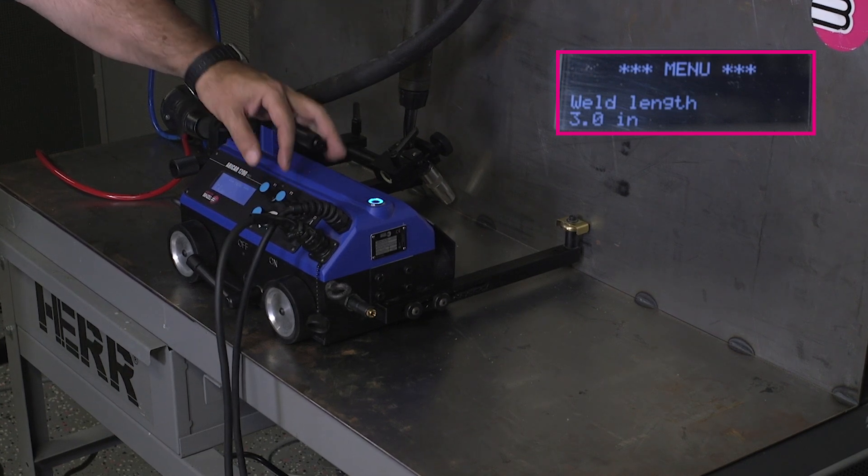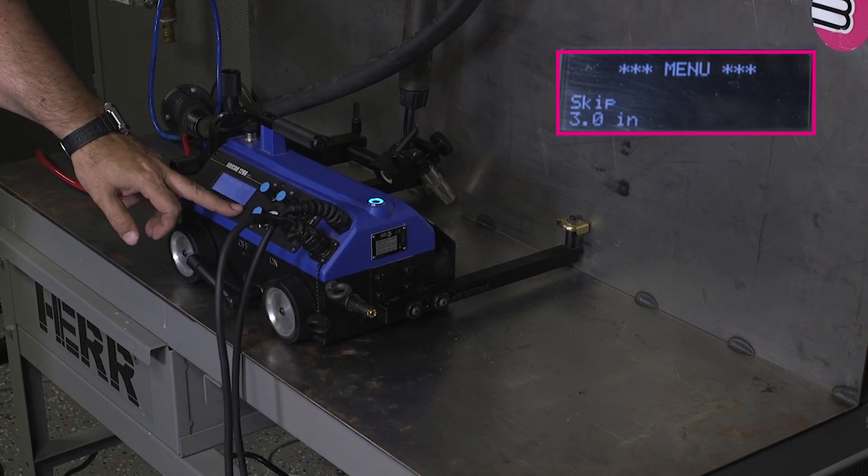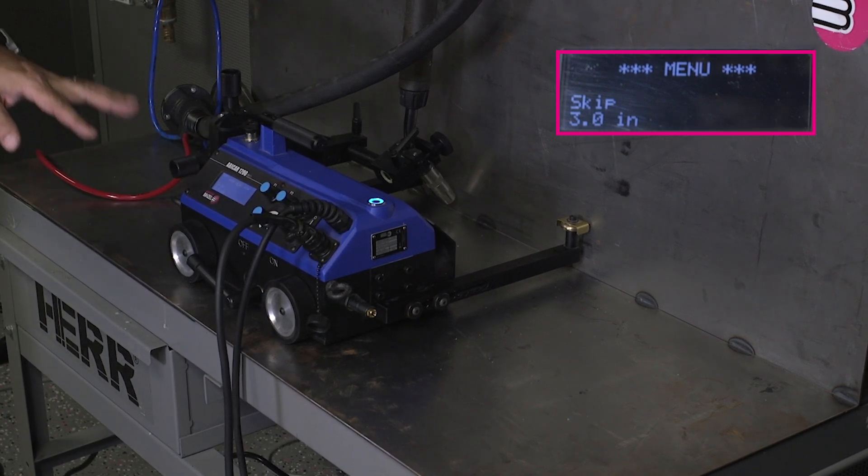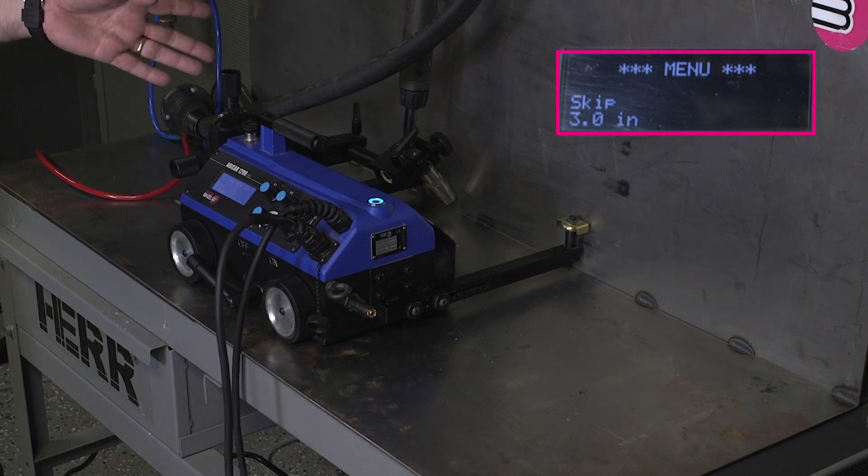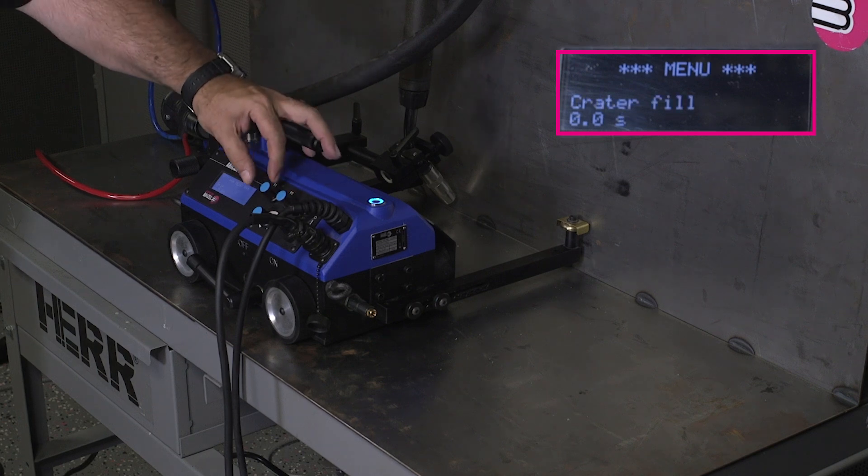There's our weld length. Now it's going to ask for the skip. What is the difference between the end of weld one before the start of weld two? So if it's a three on nine, we just take nine minus three. That's six inches in between the two.